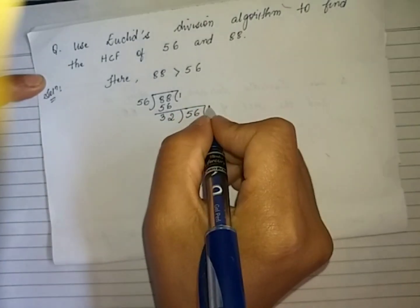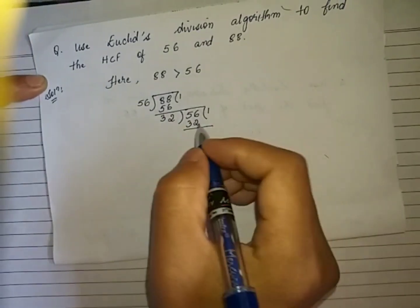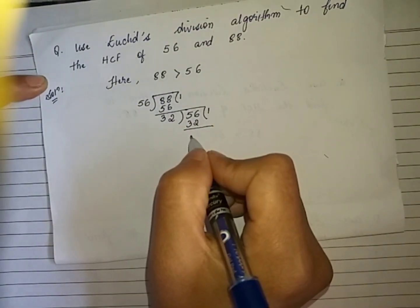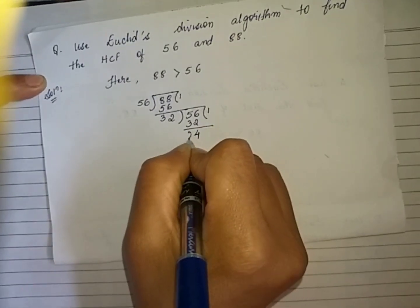32 into 1 is 32, and the remainder is 24.